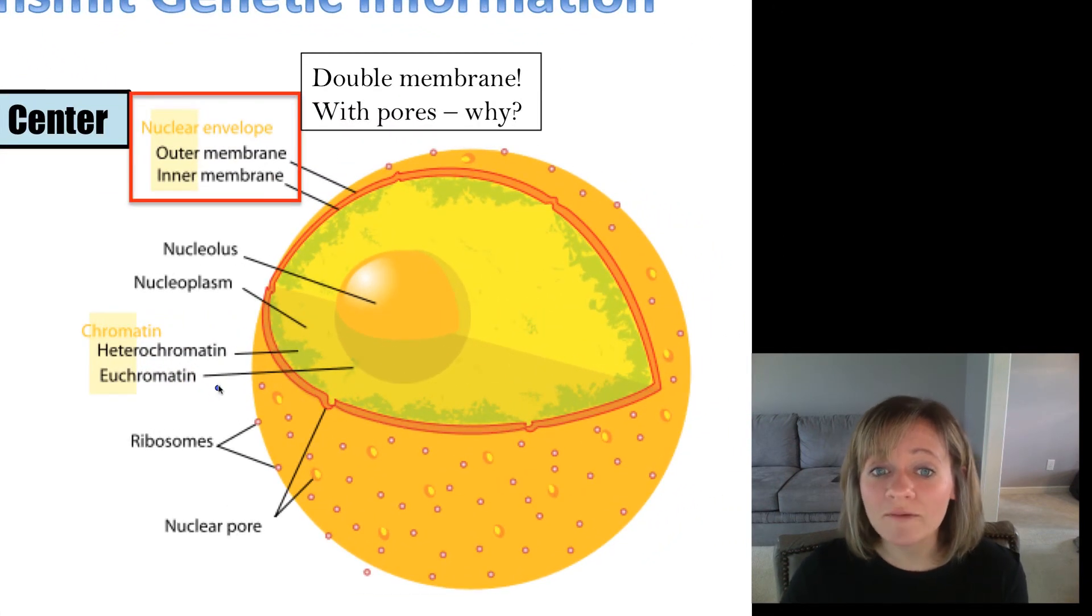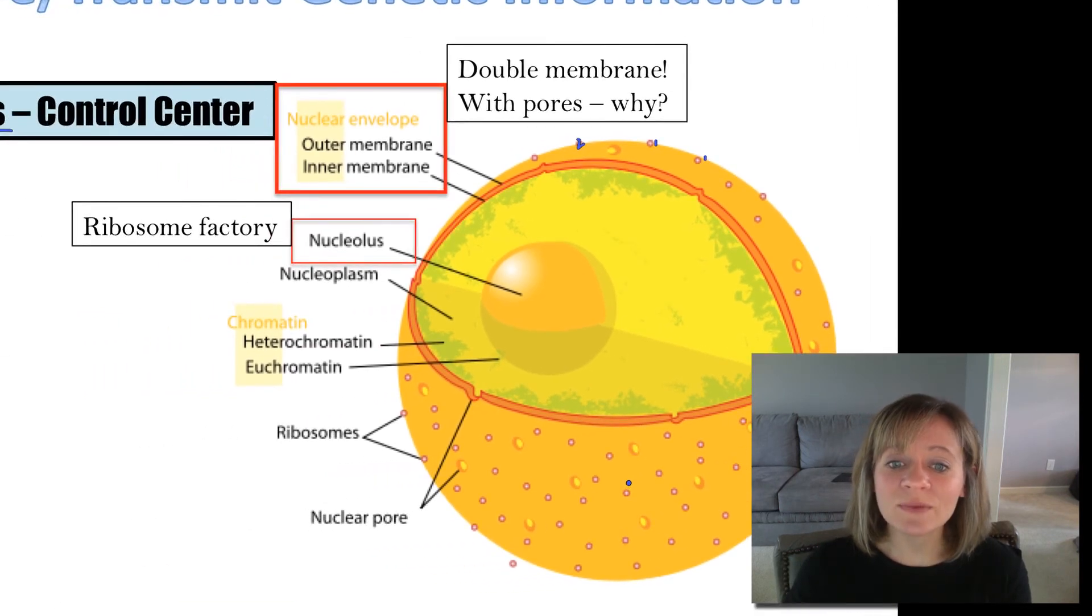First, we have the nuclear envelope. It's a double membrane, an outer membrane, and an inner membrane that encloses all of the genetic information, and it has these little pores. I want you to think about and write down in your notes why. Why does this nucleus have these little pores? Think about a wiffle ball with all the big holes in it. That's what the nuclear envelope looks like. Secondly, we've got the nucleolus sitting in the center, and this is what makes ribosomes. That's the only job of the nucleolus. It's a ribosome factory.